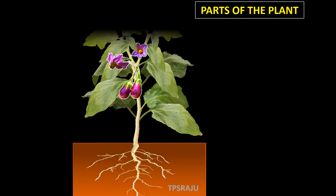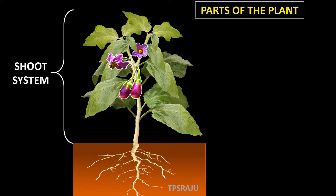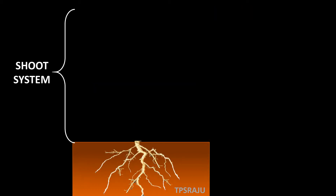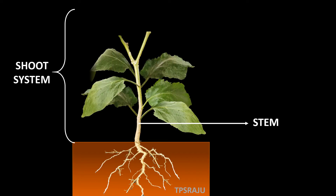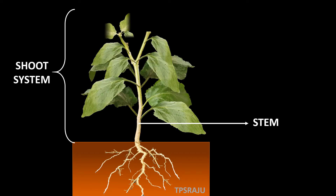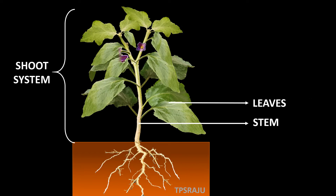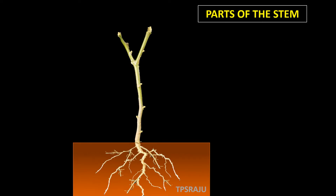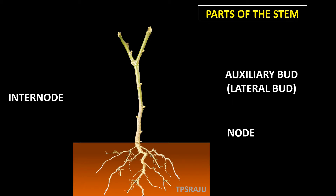In the first video, we learnt that the aerial part of the plant is called the Shoot System. The Shoot System consists of stem, leaves, flowers and fruits. The main axis of the shoot system is the stem. It has nodes, internodes, axillary buds and terminal buds.